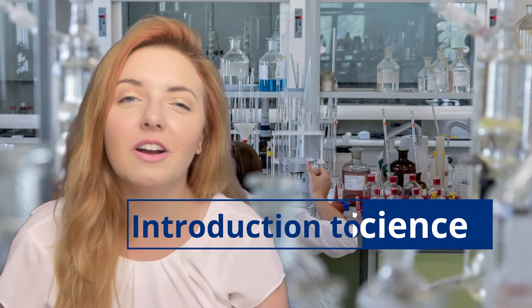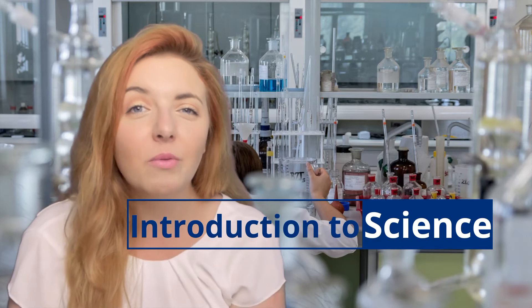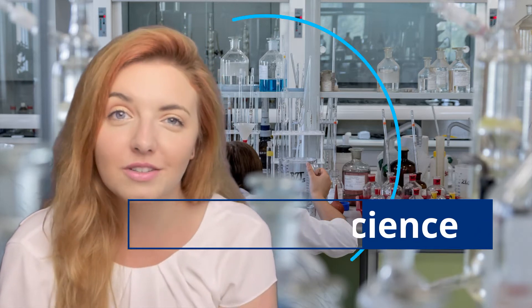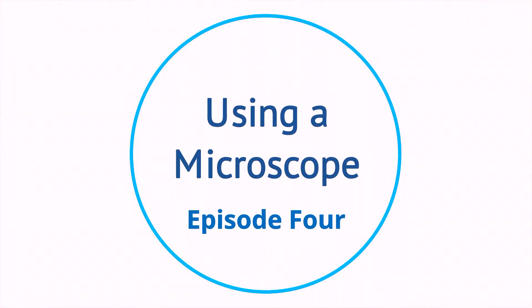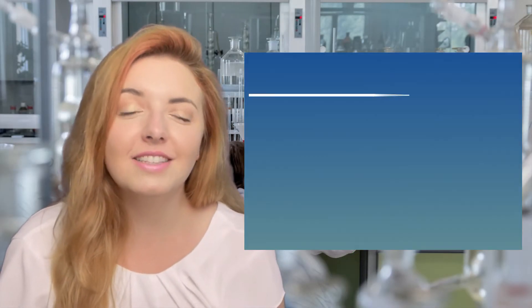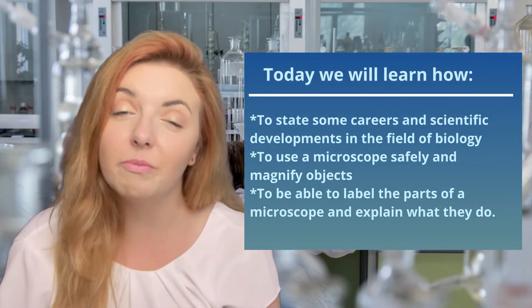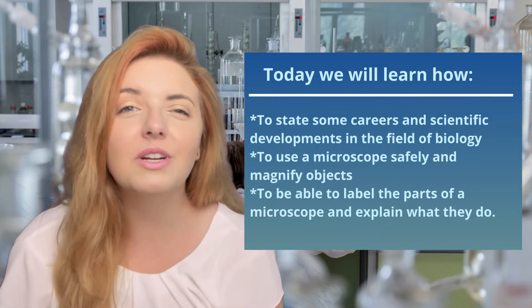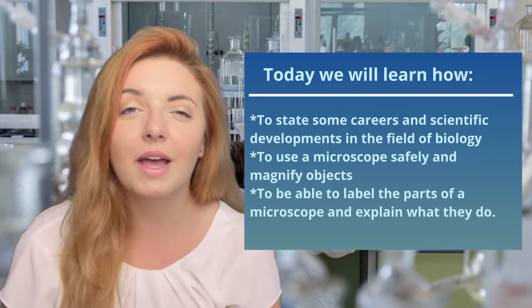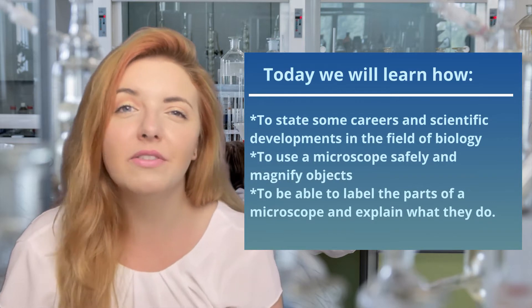Welcome back to Beyond, and this is episode four of our Introduction to Science series. Today we're going to be looking at how to use a microscope. We'll learn how to state some careers and scientific developments in the field of biology, how to safely use a microscope to magnify objects, and we'll be able to label the different parts of the microscope and what they do.